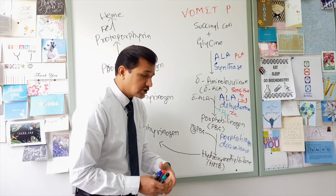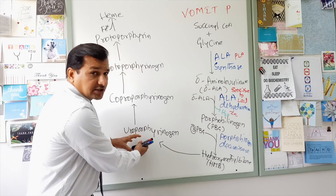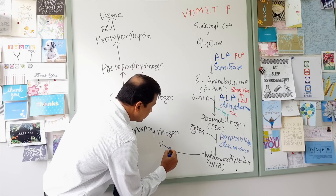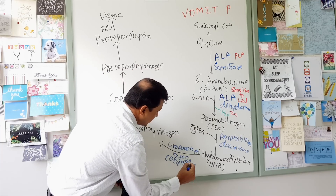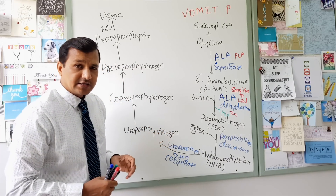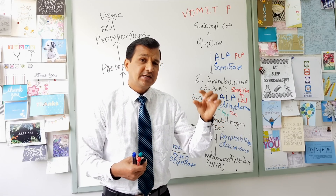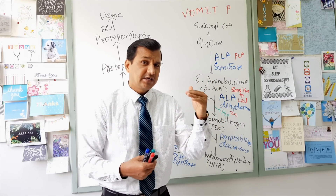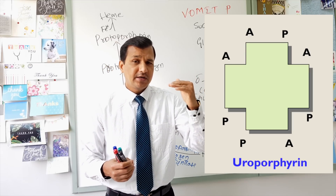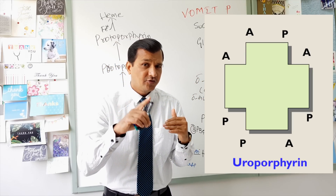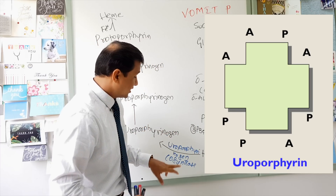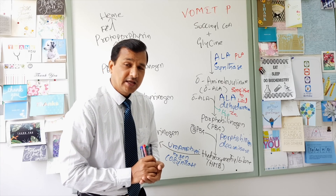The linear hydroxymethylbilane undergoes cyclization to make uroporphyrinogen, done by the enzyme uroporphyrinogen III cosynthase. This enzyme also flips the side chains present in the fourth pyrrole ring. The side chains in uroporphyrinogen are acetate and propionate; in the first three rings they appear as acetate-propionate, but in the fourth ring the order is flipped to propionate-acetate. This flipping of the side chains is done by uroporphyrinogen III cosynthase.